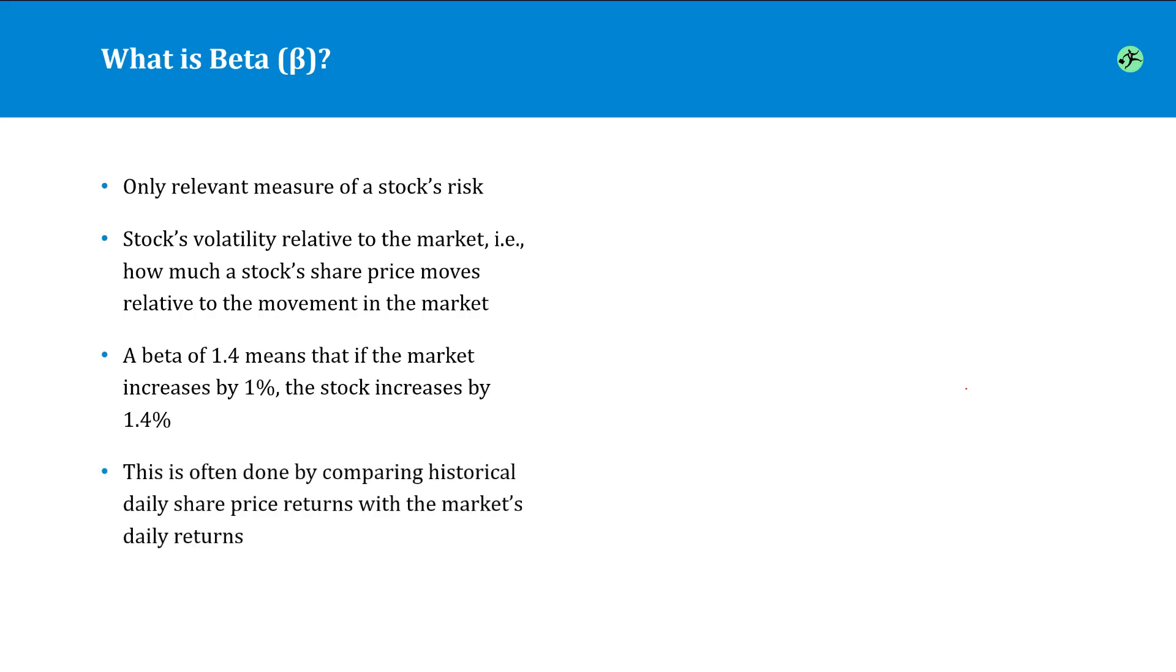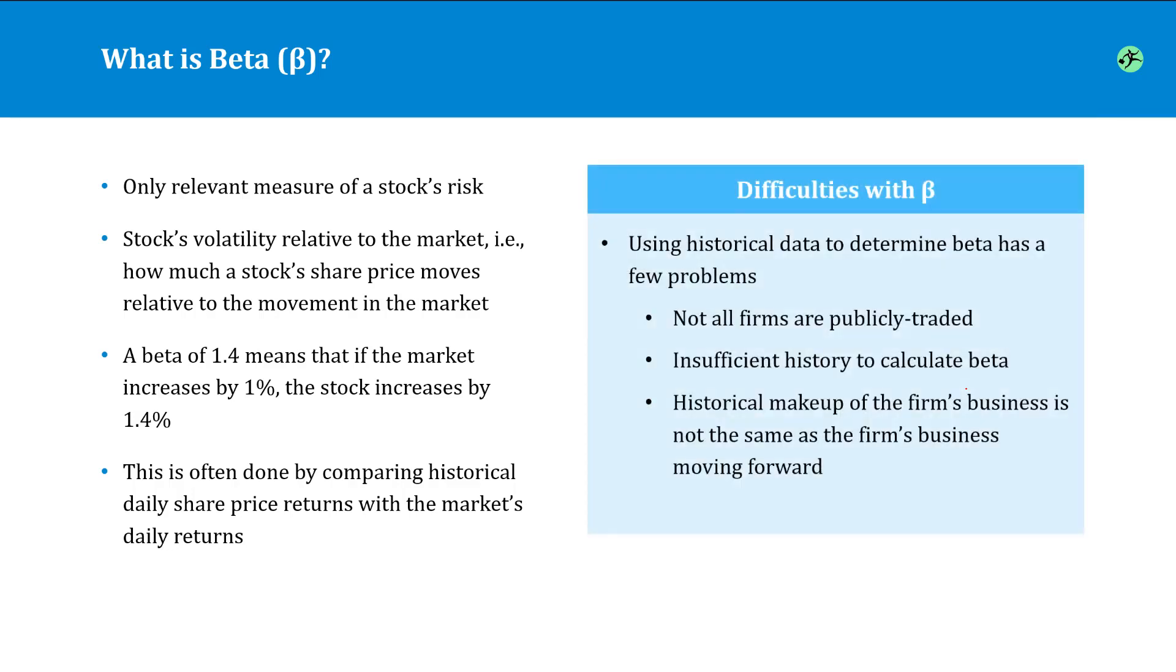So one way of determining beta is actually to compare the historical share price returns with the daily returns on the market as a whole, and then look at how this relationship fluctuates over time. The problem is this approach actually has a few problems with it or limitations.